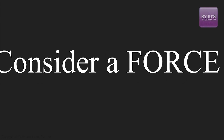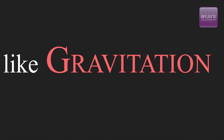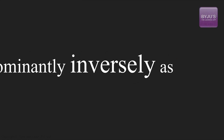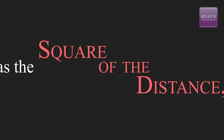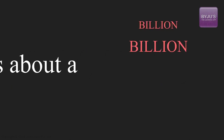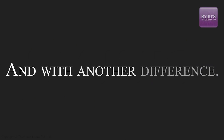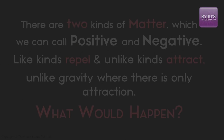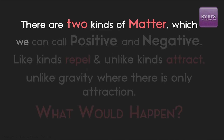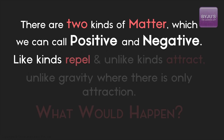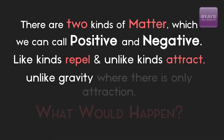Consider a force, like gravitation, which varies predominantly inversely as a square of the distance, but which is about a billion, billion, billion, billion times stronger. And with another difference: there are two kinds of matter, which we can call positive and negative. Like kinds repel and unlike kinds attract, unlike gravity where there is only attraction.